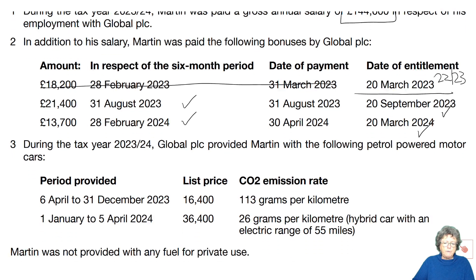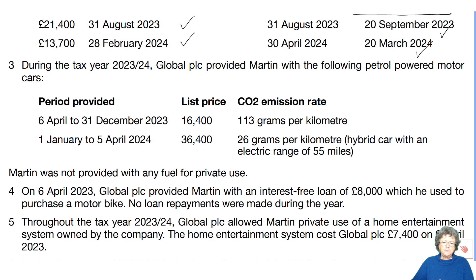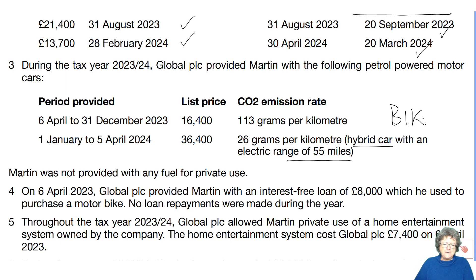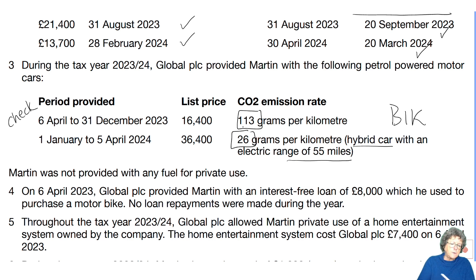He had a car until December, and then another one from January which is a hybrid car with an electric range — so we have to deal with that as a benefit in kind. You'll have to check the CO2 emissions, check the rates to see how that works, and do the calculations.